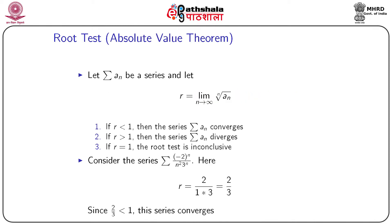Now we define the root test, also called the absolute value theorem. Let Σaₙ be a series and let r = lim(n→∞) |aₙ|^(1/n). If r < 1, the series converges; if r > 1, the series diverges; if r = 1, the root test is inconclusive. For example, with the series Σ (−2)ⁿ/(n²·3ⁿ), we get r = 2/3 < 1, so the series is convergent.